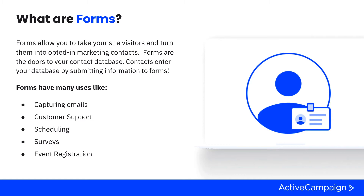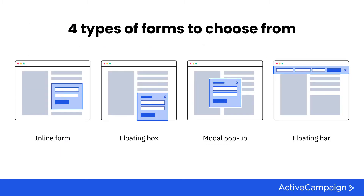Whatever the uses might be, just know that forms can meet your contacts at any point in their customer journey. There are four different types of forms in ActiveCampaign. The main type is your inline form, which not only allows you to capture name and email but also gives you the opportunity to include any custom fields you've created, so you can collect exactly the information you need from your contact.